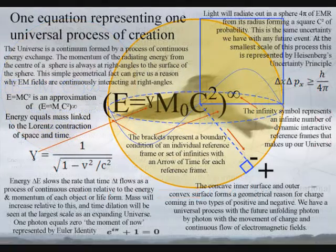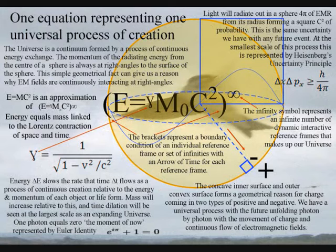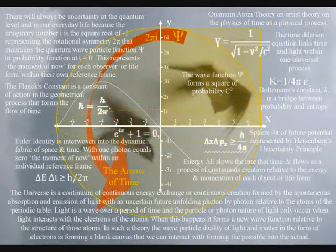The brackets in the equation represent a dynamic boundary condition of an individual reference frame with an arrow of time for each reference frame.